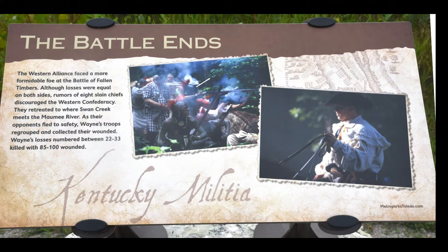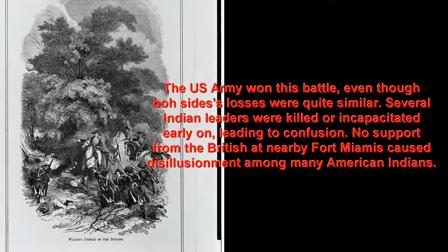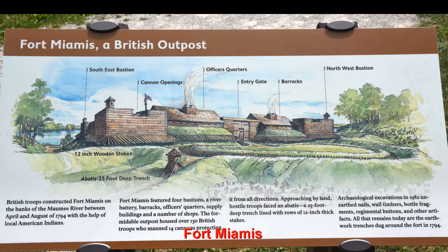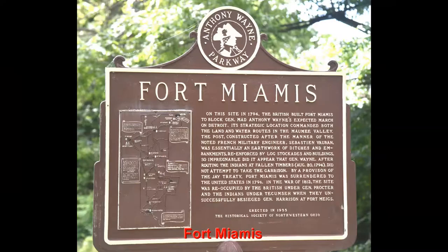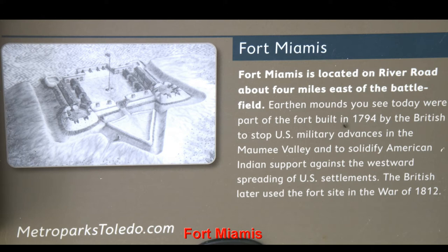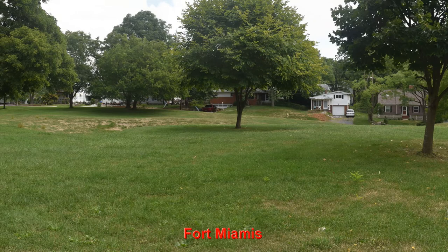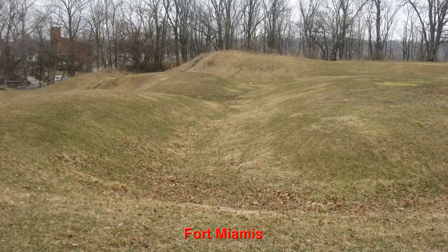Now, a lot of the numbers you see are estimates, so there are variations. But the U.S. Army basically won this, and one of the reasons why is because several tribal leaders were either killed or taken out of play, which caused confusion. The tribes decided to go back over to see if the British would help them out at Fort Miami, which is just a couple of miles away. Well, the British had just signed a treaty with America, so they didn't want to get involved. They did not open up their fort to allow the American Indian tribes fighting the American army to come in. This is the scene of that fort, and this led to a lot of disillusionment among the tribes willing to fight the American army.